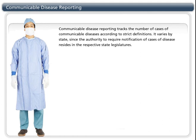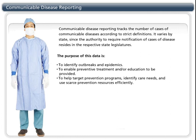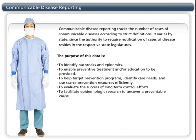Communicable disease reporting tracks the number of cases of communicable diseases according to strict definitions. It varies by state, since the authority to require notification of cases of disease resides in the respective state legislatures. The purpose of this data is to identify outbreaks and epidemics, to enable preventive treatment and/or education to be provided, to help target prevention programs, identify care needs, use scarce prevention resources efficiently, to evaluate the success of long-term control efforts, to facilitate epidemiologic research to uncover a preventable cause, and to assist with national and international disease surveillance efforts.